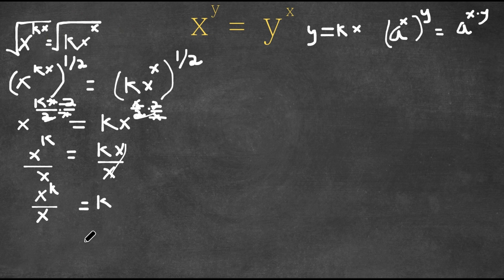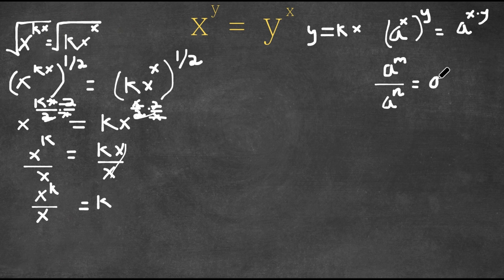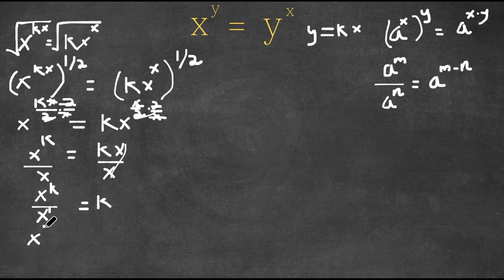For dividing exponents, a to the power of m over a to the power of n equals a to the power of m minus n. So x to the power of k over x to the power of one is x to the power of k minus one, and this equals k.